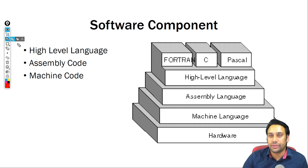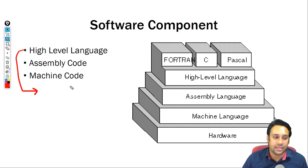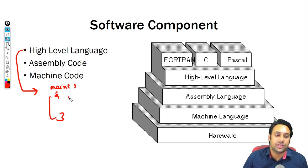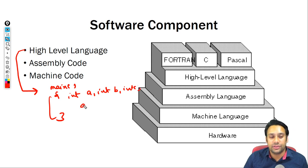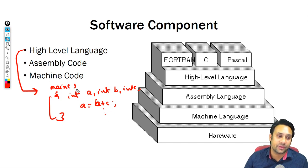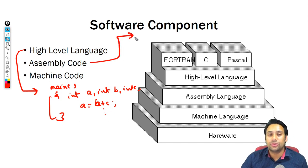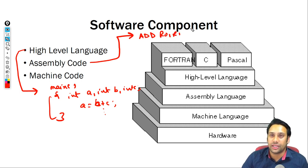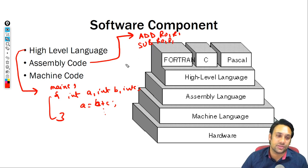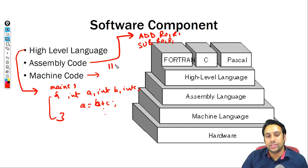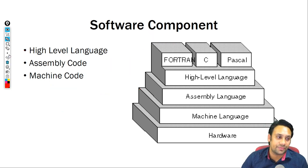In a high level language like C, you can write a main function, create variables like integer A, integer B, integer C, and perform statements like A equals B plus C. In assembly code, it would be something like: add R0, R1, where R0 and R1 are registers. And in machine code, you write in binary.